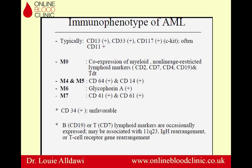How can we diagnose acute myeloid leukemia (AML) using flow cytometry? Typically AML is CD13 positive, CD33 positive, CD117 positive, and often CD11b positive. M0 AML will have co-expression of myeloid and non-lineage-restricted lymphoid markers — meaning both T-cell markers (CD2, CD7, CD4) and B-cell markers (CD19) plus TdT. M4 and M5 have a monocytic component so they express CD64 and CD14. M6 is erythroid AML, expressing glycophorin A. M7 expresses CD41 and CD61.